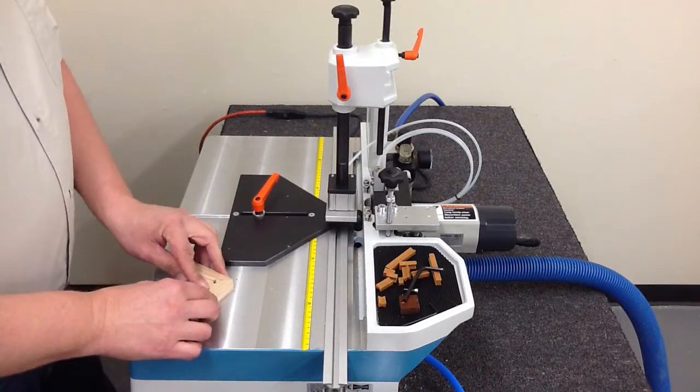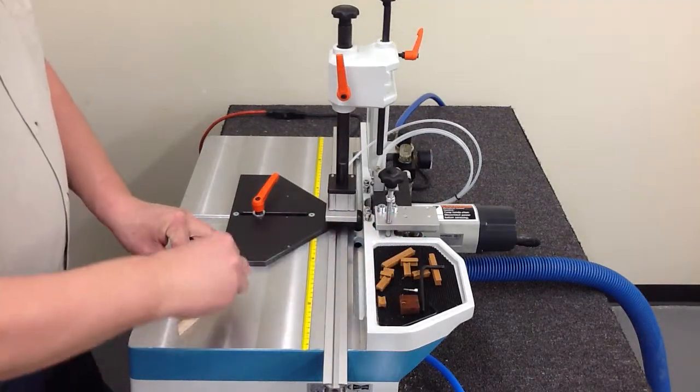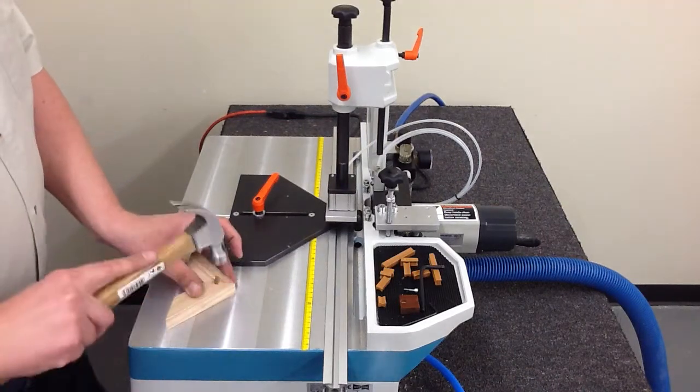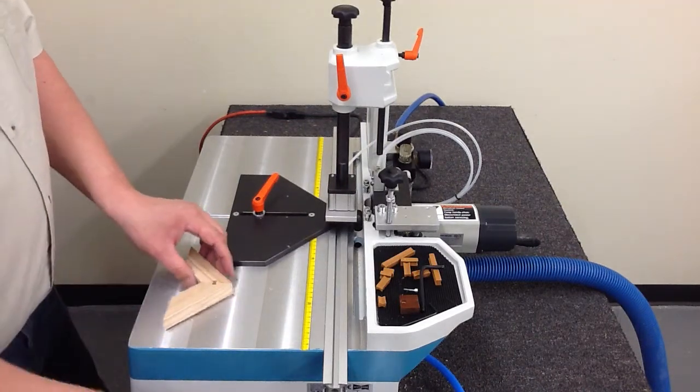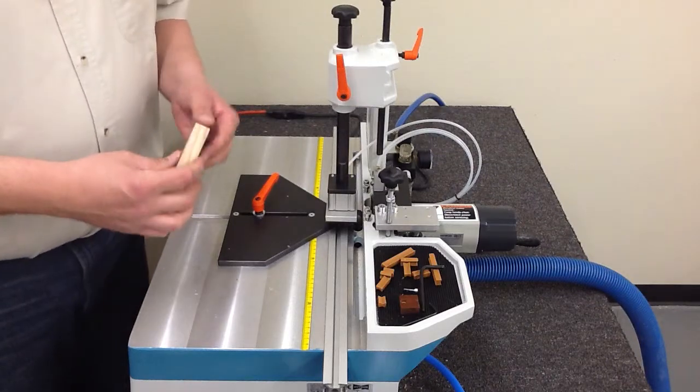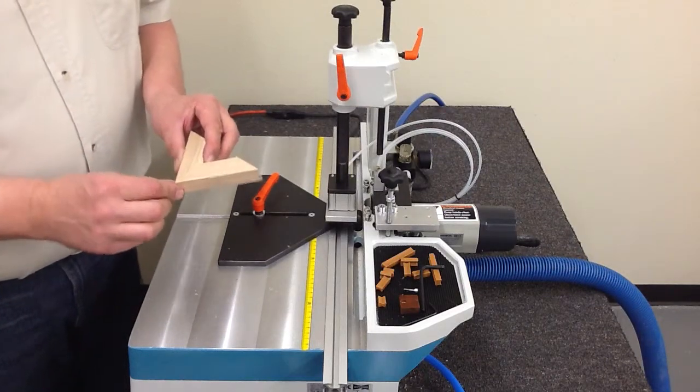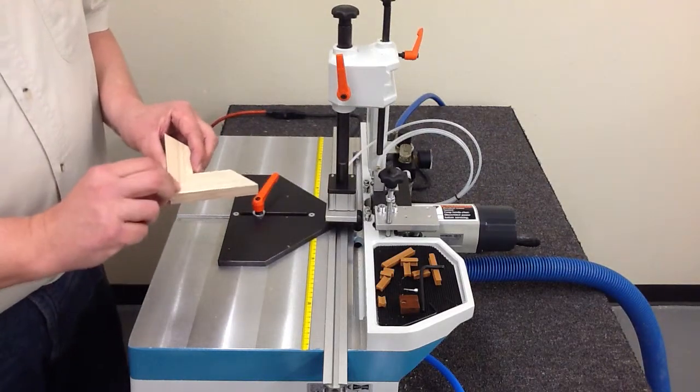We've got two cuts made. The dovetail key. Slide it in. We can tell it goes in nice and tight. The corner is aligned properly. The face of the joint is nice and tight.